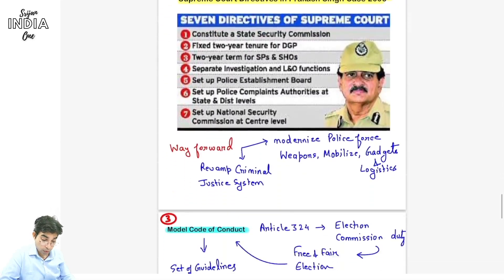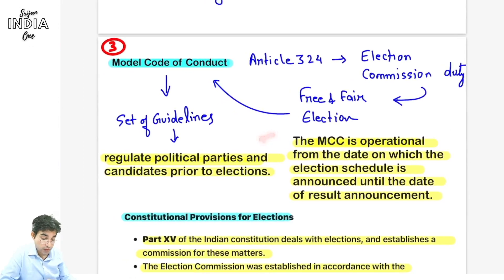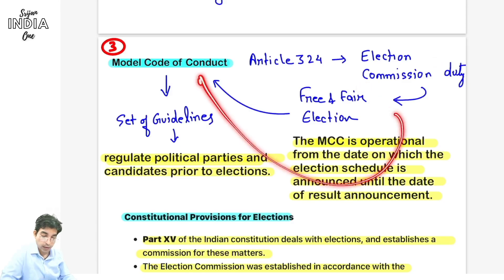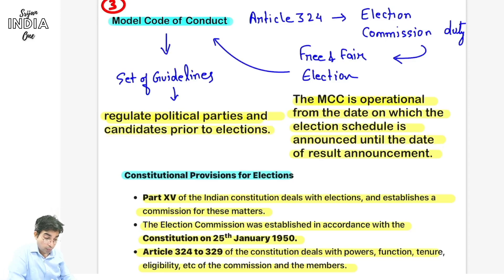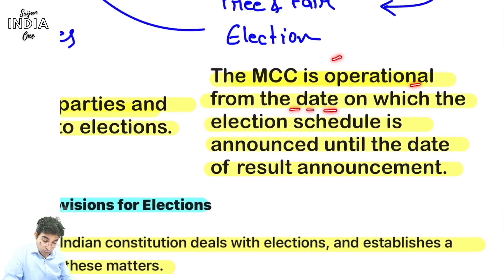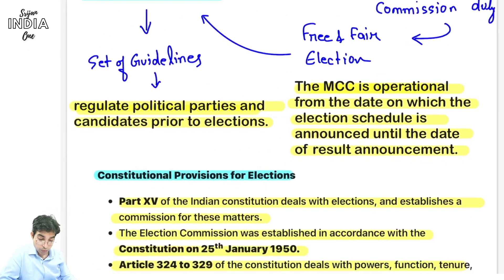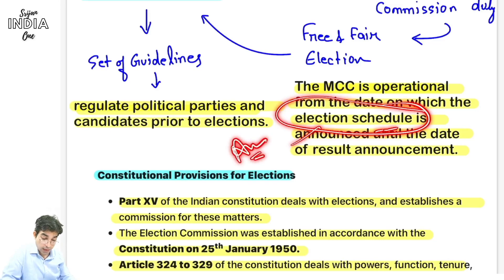NHRC and police reforms bahut zaroori hai. Third topic: model code of conduct. Article 324 mein kya likha hai - Election Commission ki duty hai ki free aur fair election karaaye. Kuch din pehle by-polls hue toh hum Model Code of Conduct padh rahe hain. MCC kya hota hai - ek guidelines hain jo political parties aur candidates sabko follow karni hain election ke time pe. Yeh regulate karta hai political parties aur candidates ko prior to election - freebies ya bribe nahi chalega - like that model code of conduct.